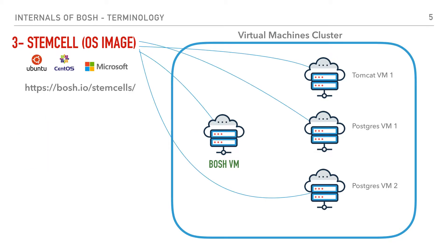The third term will be stemcell. When we create the BOSH VM, or when we tell the BOSH director process to create a set of VMs and deploy software on them, the base OS image used in the creation of these VMs is called a stemcell. These OS images can be downloaded from the official BOSH website. If you're familiar with AWS, an easy way to think about a stemcell is as a custom AMI that you can use to create VMs. In more official terms, a stemcell is a versioned operating system image wrapped with IaaS-specific packaging.